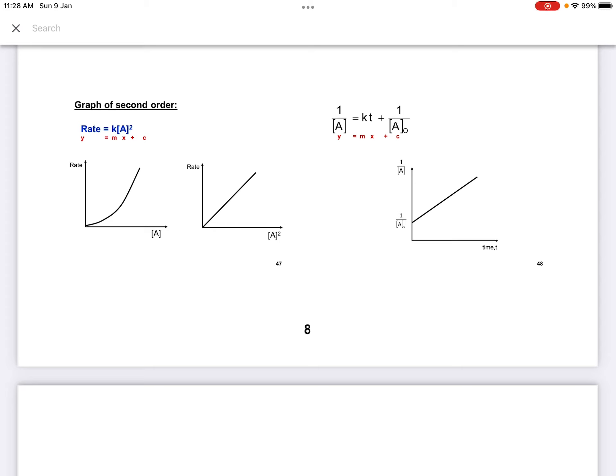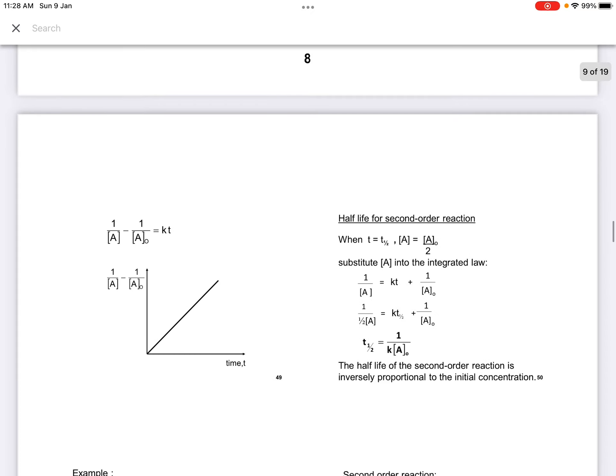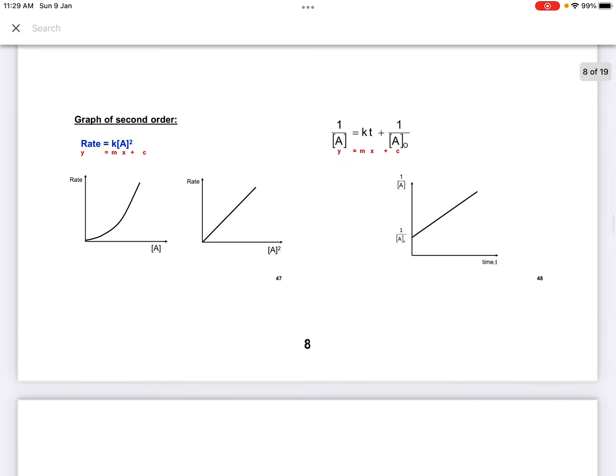If integrated rate law, we also can use the concept Y equals to Mx plus C, the linear equation, with the concentration 1 over A versus time. The interception will be 1 over A0 at axis Y. Or we can also plot 1 over A minus 1 over A0 versus time, which is also Y equals to Mx plus C. The difference is this one will pass through the origin, while this graph has an interception at axis Y, 1 over A0.